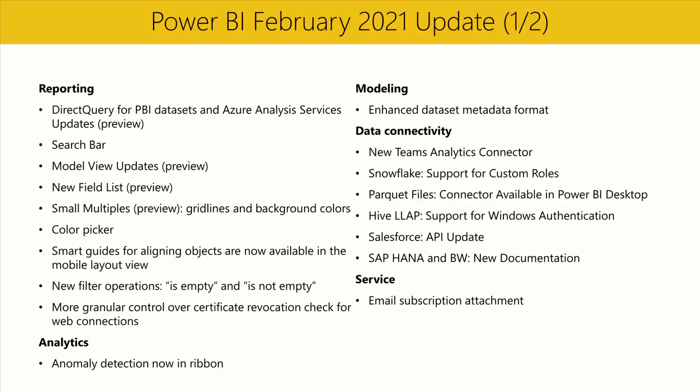We are also bringing you more granular control over certificate revocation checks for web connections. Since we introduced this feature in November 2020, we've heard your feedback that you need more fine-grained control. Now the basic check will accept certificates whose revocation status is unknown, such as when it's not specified in the certificate — important for organizations that use corporate proxy servers. You can still disable the revocation check or enable it in comprehensive mode, which will not accept certificates with unknown revocation status.